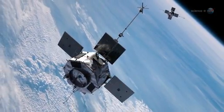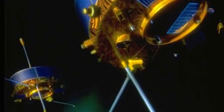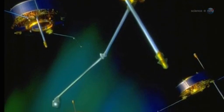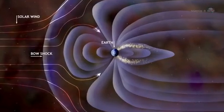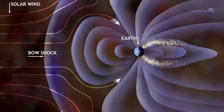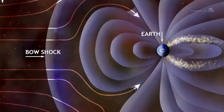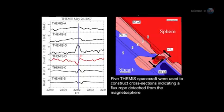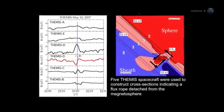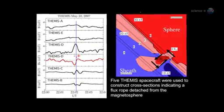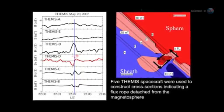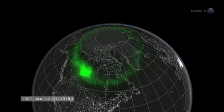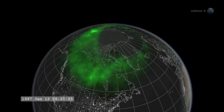Observations by NASA's Themis spacecraft and Europe's Cluster probes suggest that these magnetic portals open and close dozens of times each day. They're typically located a few tens of thousands of kilometers from Earth, where the geomagnetic field meets the onrushing solar wind. Most portals are small and short-lived. Others are yawning, vast, and sustained. Energetic particles can flow through the openings, heating Earth's upper atmosphere, sparking geomagnetic storms, and igniting bright polar auroras.